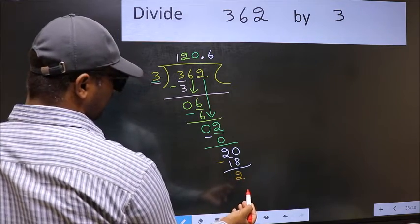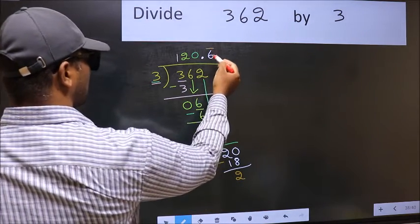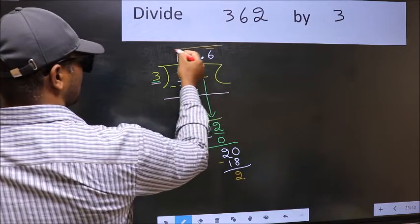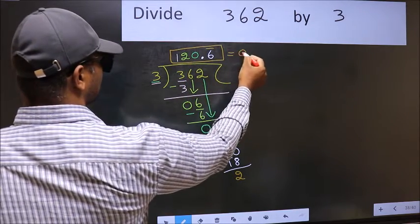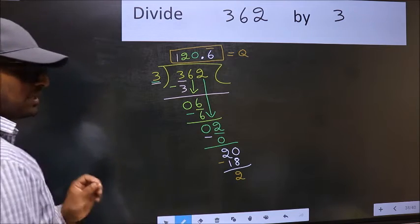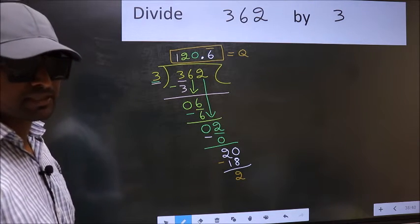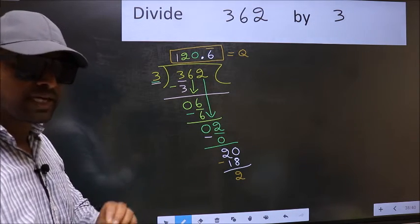We got 2 again. That means we get a bar on this number. So this is our quotient. Did you understand where the mistake happens? You should not do that mistake.